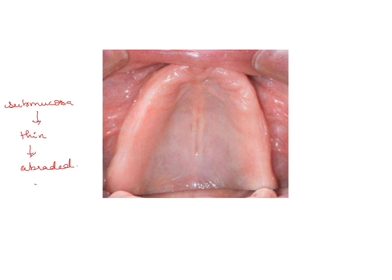The mid palatine raphae and incisive papilla are both prominent here. In this case, a selective pressure impression is made by adding an additional layer of spacer wax in the custom tray over these relief areas. This makes the impression material thicker in those areas, reducing the pressure applied. The denture then mimics this relief because it is fabricated according to the final impression.